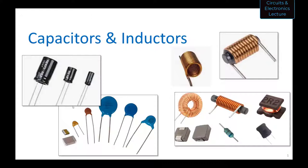On the right are inductors — they look like a coil of wire because they are, including these chip inductors at the bottom which are coils of wire around a core. The core might be a ferrite material or just air. You can literally take a wire, coil it up, and you have an inductor. We're going to talk about those today.